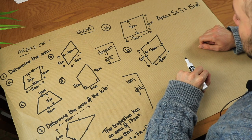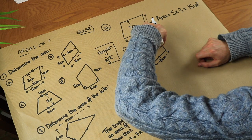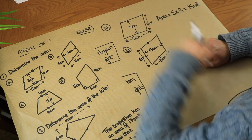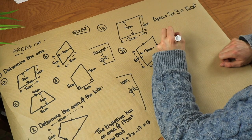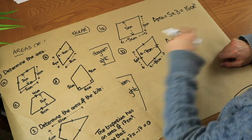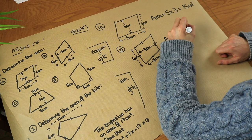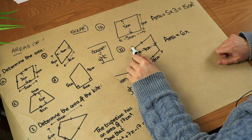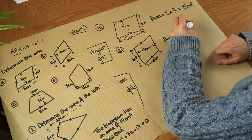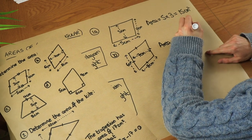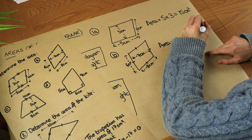Have we got two perpendicular lengths here? Yes we have — the six is perpendicular to the seven, so let's use those two lengths. The area is the width — in this case we'll make that the six, even though it's vertical — times by the perpendicular height of seven, giving 42 centimetres squared.